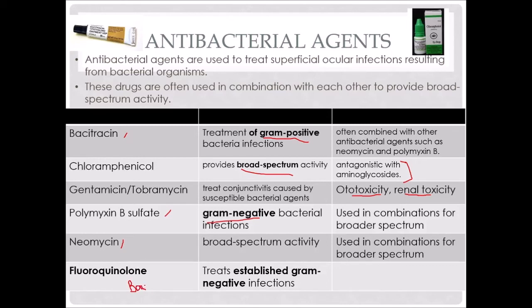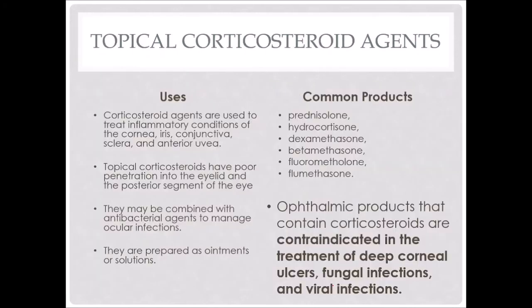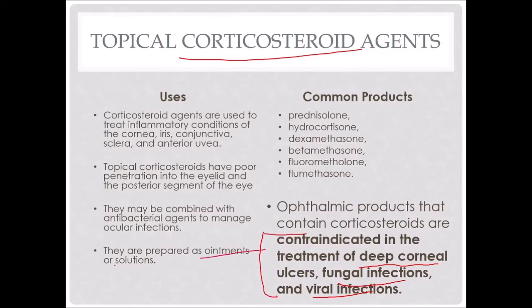We can use corticosteroids in the eyes, but we do not want to use them if we have deep corneal ulcers, fungal infections, or viral infections — it will delay healing. Corticosteroid agents are used to treat inflammatory conditions of the cornea, iris, conjunctiva, sclera, and anterior uvea. Topical corticosteroids have poor penetration into the eyelid and the posterior segment of the eye. They can be used in combination with antibacterial agents to manage ocular infections, but we have to be careful. Typically used as ointments or solutions, and you usually see them as prednisolone, hydrocortisone, dexamethasone, betamethasone, fluorometholone, and flumethasone. We have to check with a fluorescein stain to make sure the animal doesn't have any corneal ulcers before allowing use.